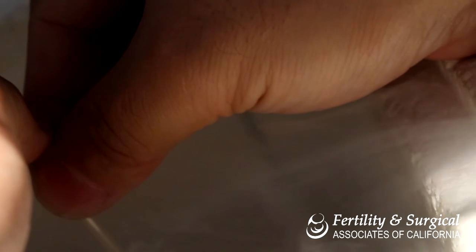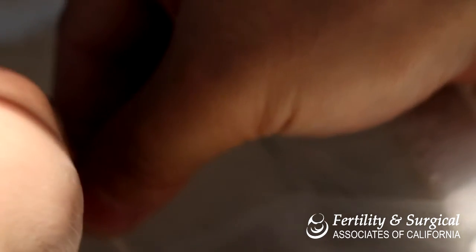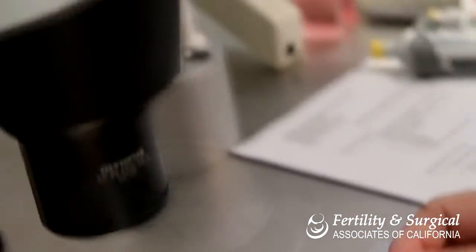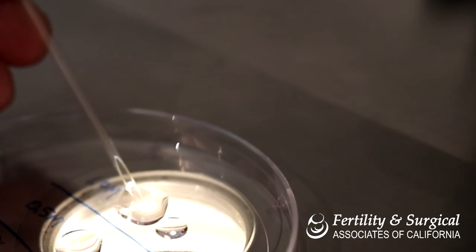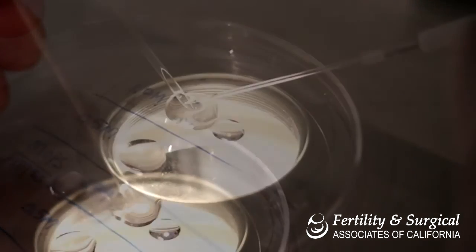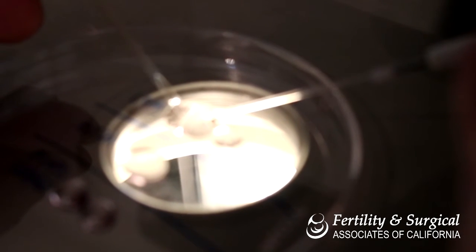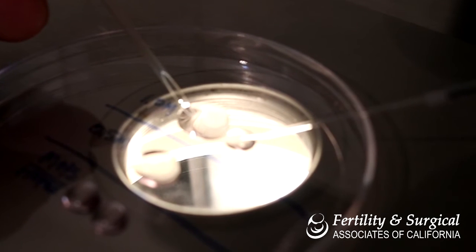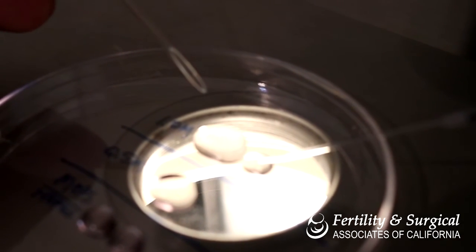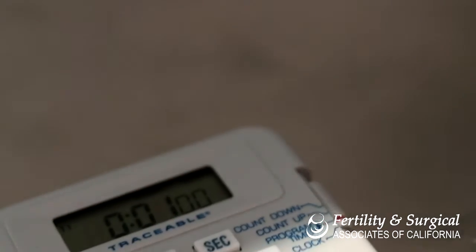Step 4: When ready, quickly transfer the inner straw into a waiting dish. Place the tip of the inner straw bevel side up into the thaw media. The embryo should be located on the tip of the straw. Start the timer for 1 minute.